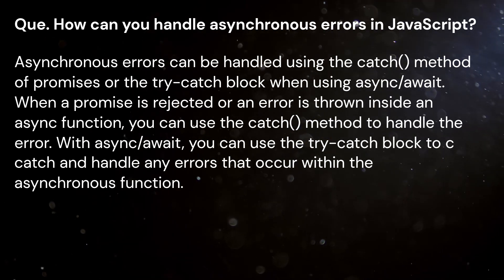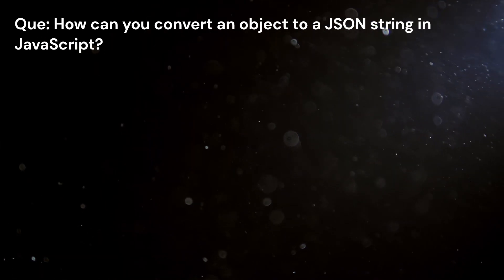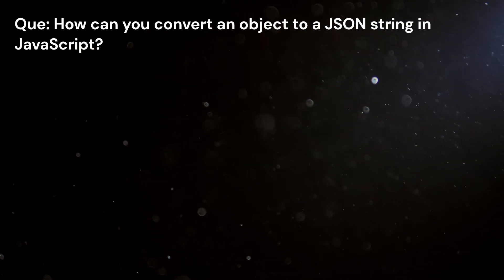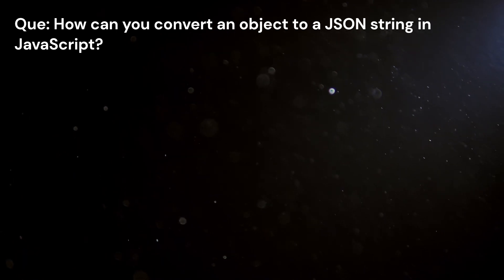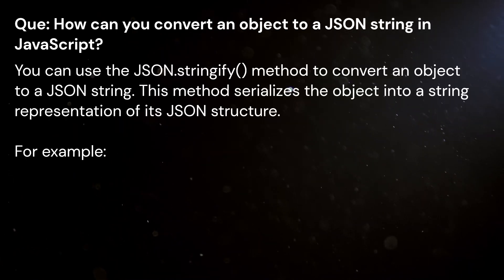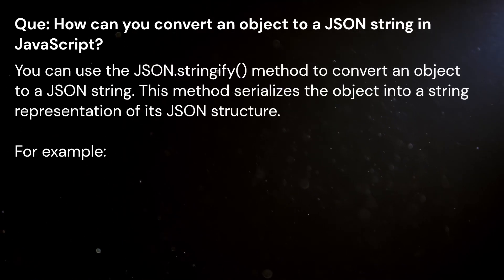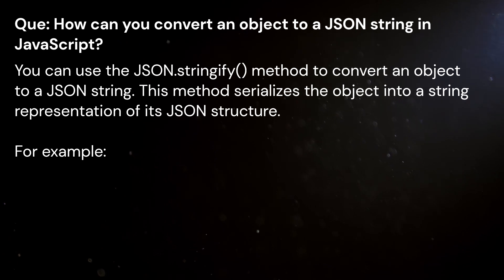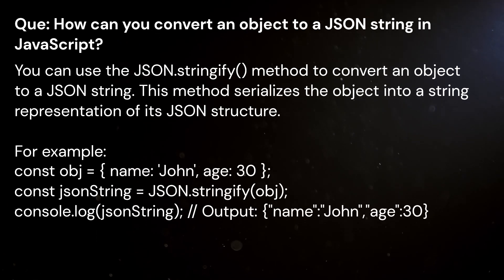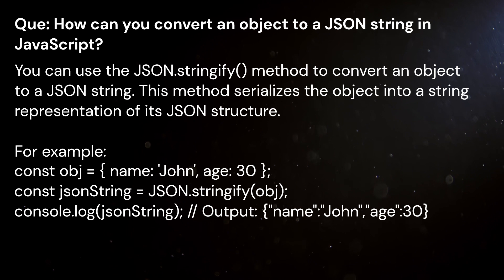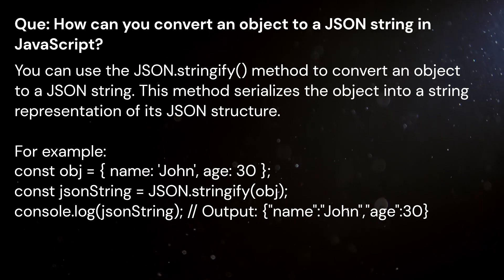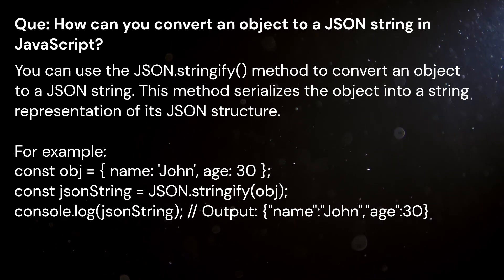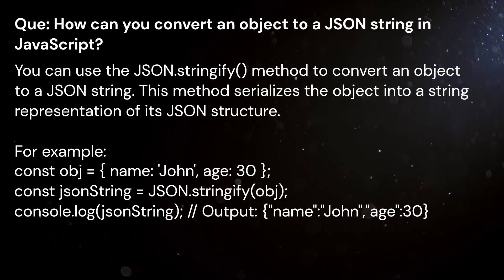Question: How can you convert an object to a JSON string in JavaScript? Answer: You can use the JSON.stringify method to convert an object to a JSON string. This method serializes the object into a string representation of its JSON structure.